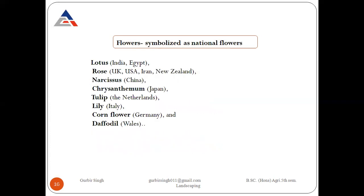Flowers also symbolize national identity. The national flower of India is lotus, and the national flower of USA, New Zealand, and Iran is rose. Chrysanthemum is the national flower of Japan, tulip is the national flower of the Netherlands, lily is the national flower of Italy, and cornflower is the national flower of Germany.